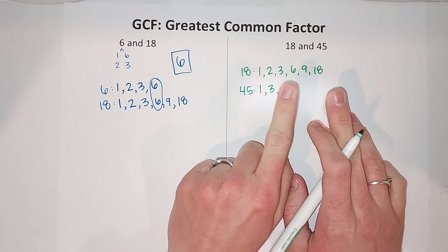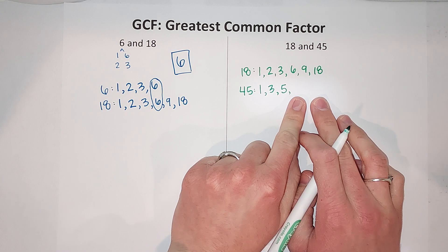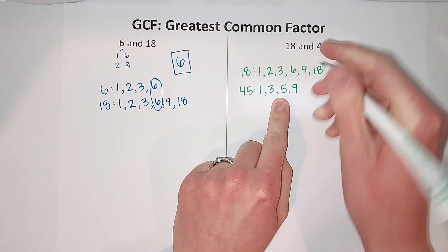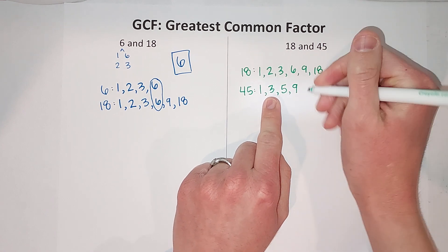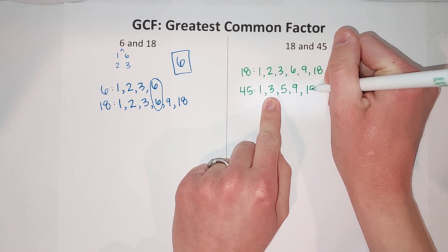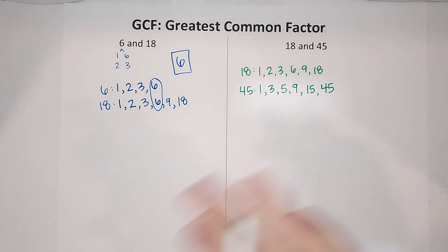So 1, 3, 5—6 doesn't go in, 7 doesn't go in, 8 doesn't go in. 9 goes in and it's 9 times 5. So once I get to those numbers that pair up, I can just go back: 3 times 15 gives me 45, and 1 times 45 gives me 45.